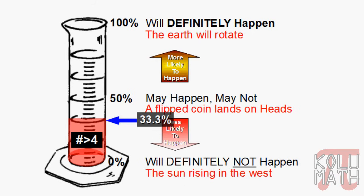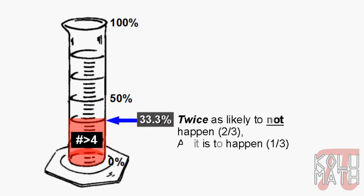Using the numbers, we can see it's twice as likely to not happen as it is to happen, because there's also the probability of getting a number four or less. And again, both of them will add up to 100%.